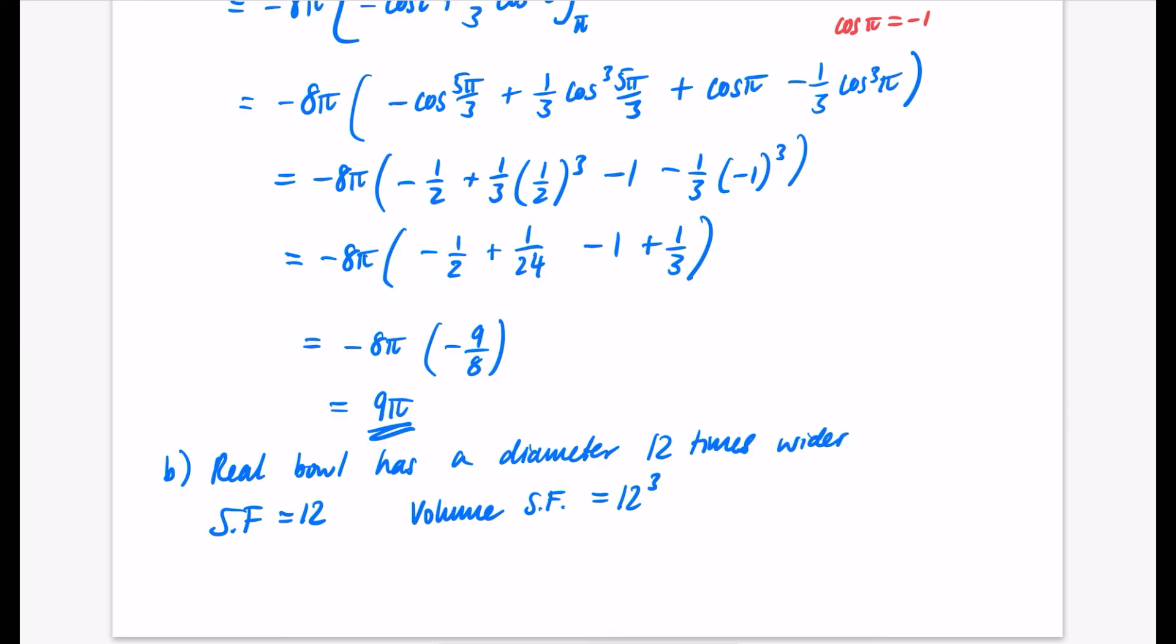But our volume scale factor is therefore equal to 12³. Remember that from GCSE, if you have the linear, the area, and the volume scale factor. So it's actually going to be 12³ times bigger. So the volume of our bowl is going to be 9π multiplied by 12³. So on my calc, I'm going to do 9π multiplied by 12³. And let's write this as a decimal. That is 48,858. I've done that to the nearest one. I'll do it to three significant figures, which is 48,900 centimeters cubed.